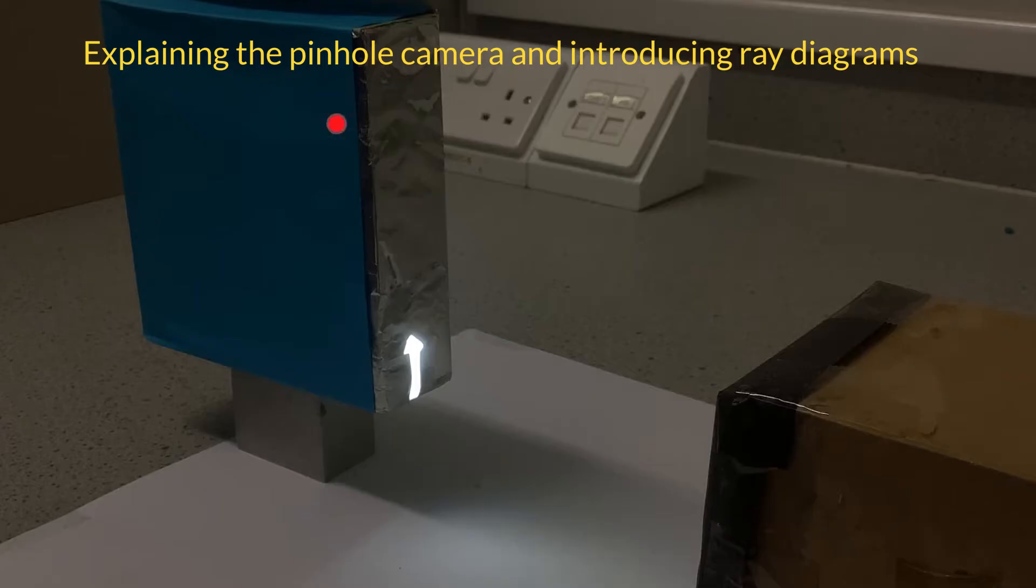As an object to look at, I've got a box here with an arrow-shaped hole in it, and I've put a torch inside, so that's sending light out in an arrow shape from the box.